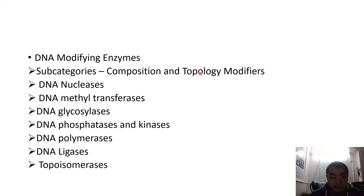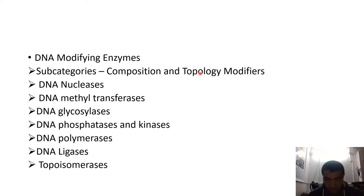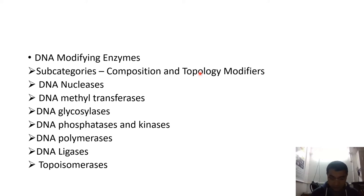On the other hand, topology modifiers are enzymes that change the topology of the DNA but there is no net gain or loss of covalent bonds. These enzymes are involved in the DNA replication process and are categorized into two forms: topoisomerase I and topoisomerase II. If a single strand is cut and sealed, that is topoisomerase I; if both strands are cut and sealed, that is topoisomerase II.